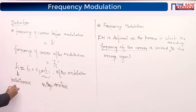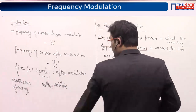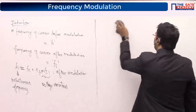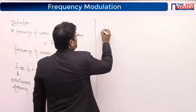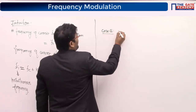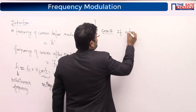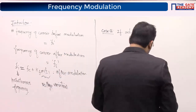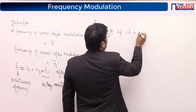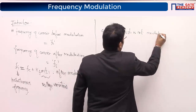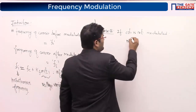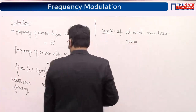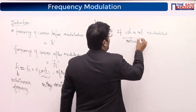Now let's demonstrate how voltage variations cause frequency variation. Take Kf = 5 kHz/volt. The message signal m(t) goes into an FM modulator mixed with a carrier, and the output is fi = fc + Kf·m(t). If m(t) changes from −10 V to +10 V: when m(t) = +10 V, Fi = fc + 50; when m(t) = 0 V, Fi = fc; when m(t) = −10 V, Fi = fc − 50.